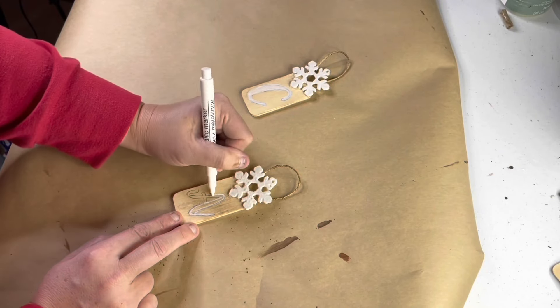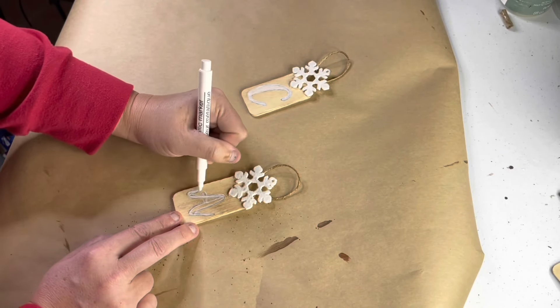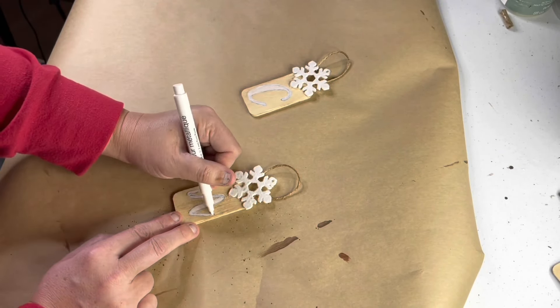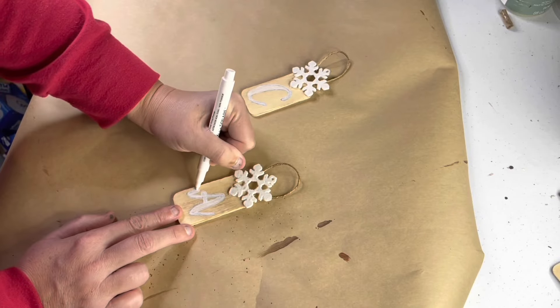Then I just used a Dollar Tree paint pen and went over the letters with that. I will say that it took several coats to cover the darker transfer from the carbon paper so you could save yourself some time if you do decide to freehand it.